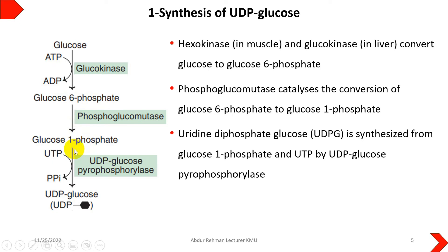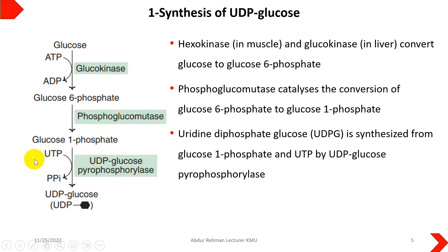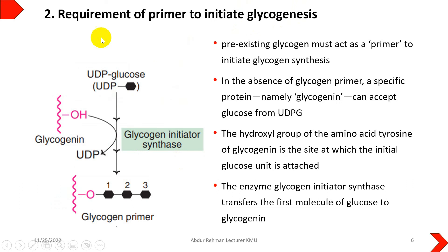In the next step, glucose-1-phosphate is converted into uridine diphosphate glucose (UDP-glucose). The enzyme involved is UDP-glucose pyrophosphorylase. In this reaction, uridine triphosphate (UTP) reacts with glucose-1-phosphate, releasing one inorganic pyrophosphate, and the UTP is converted into UDP-glucose. This completes the first major step — the synthesis of UDP-glucose.